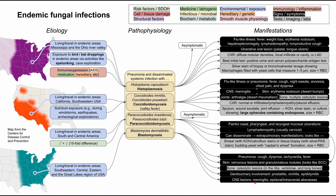Blastomycosis can also cause central nervous system lesions such as meningitis, epidural abscesses, or intracranial abscesses. For diagnosis, samples come from sputum, urine, or body fluids. First perform a KOH test to confirm it's a fungus, then do a confirmatory culture. The yeast form at body temperature will show broad-based buds — a characteristic key term for blastomycosis. The size will be approximately equal to red blood cells.